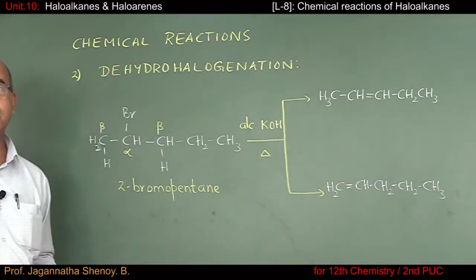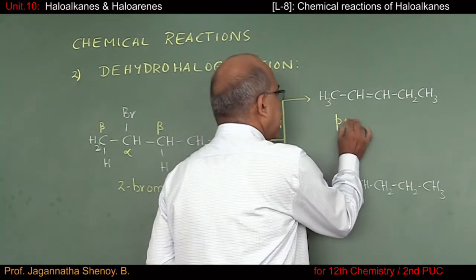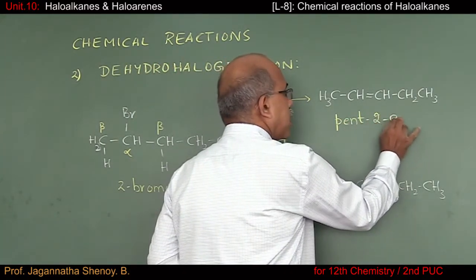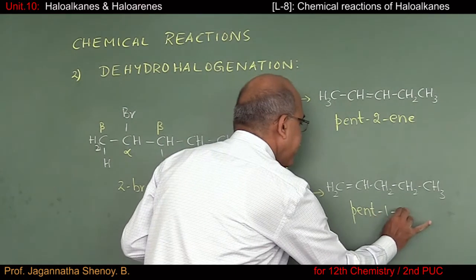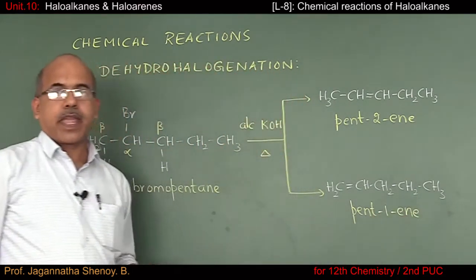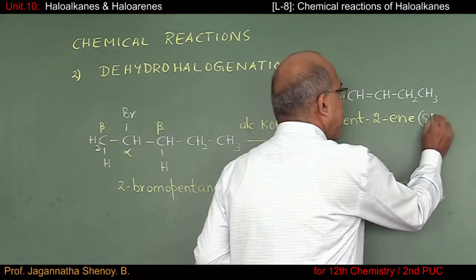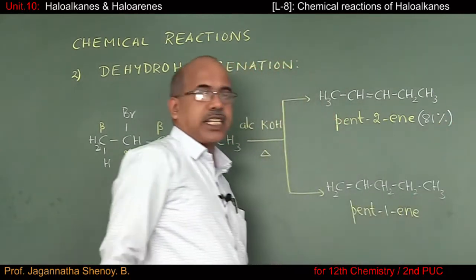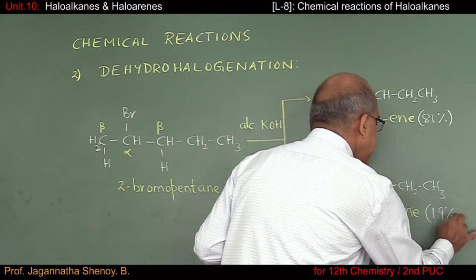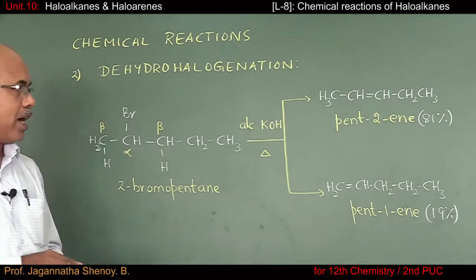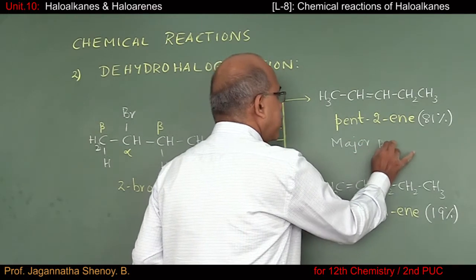So two different major products are possible. The first one is pent-2-ene and the second is pent-1-ene. When you find out the percentage yield, it is observed that pent-2-ene is formed to an extent of 81% and pent-1-ene is formed to an extent of 19%. In other words, the major product is pent-2-ene.